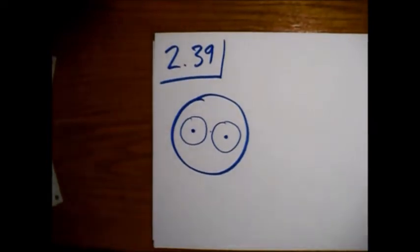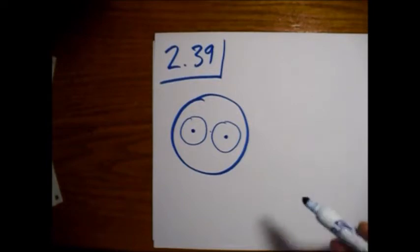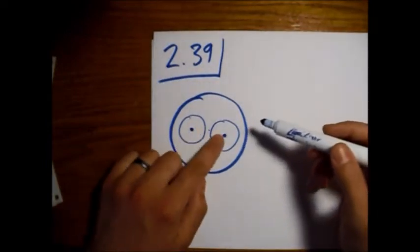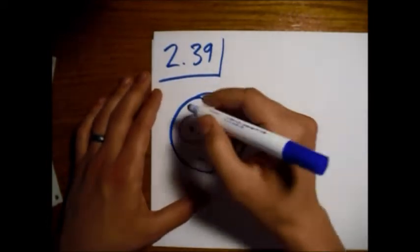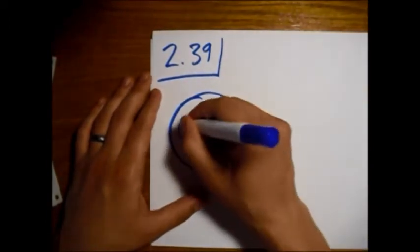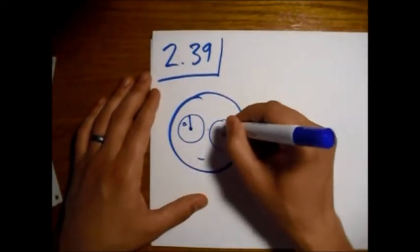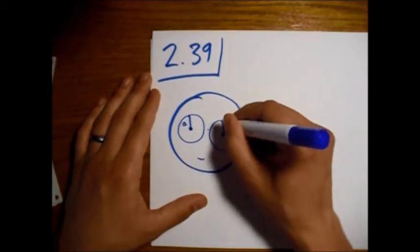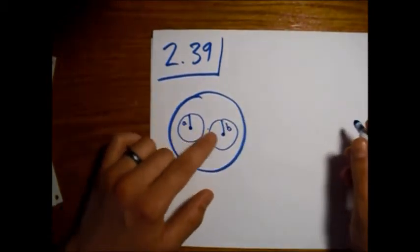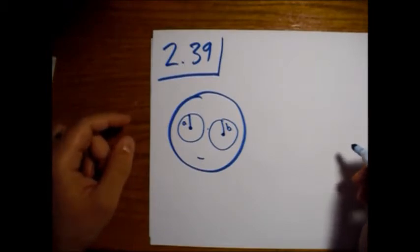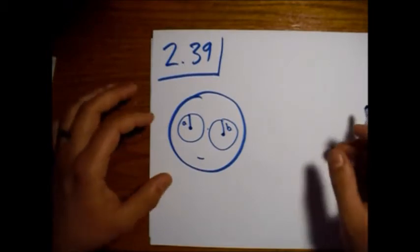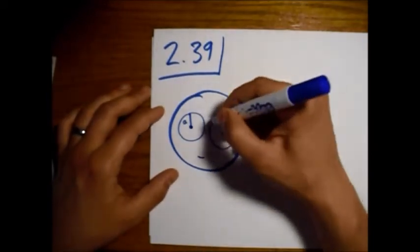Alright, so we're here at Griffith's Electrodynamics, problem 2.39. We have two spherical cavities of radii A and B. I just have a cute little guy here, but it won't look like much in a moment because we'll draw in the radii of A and B.